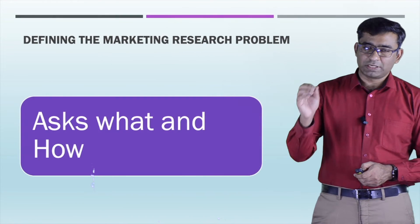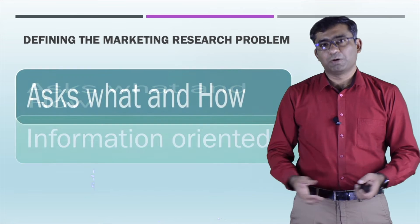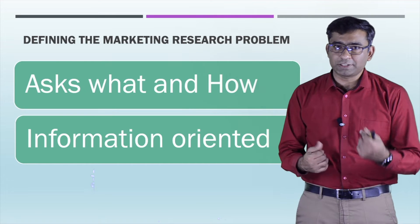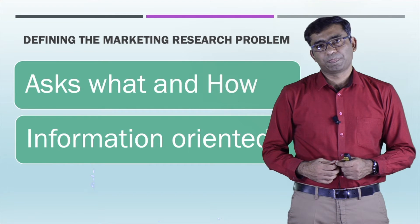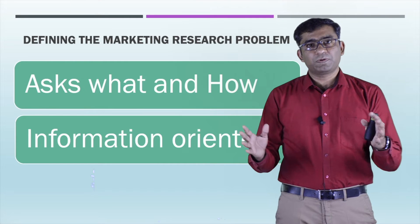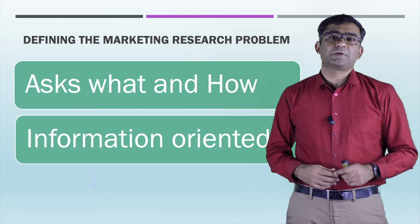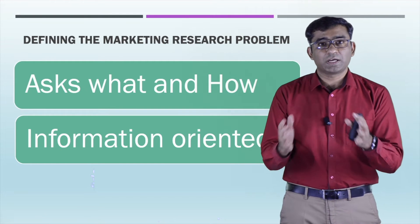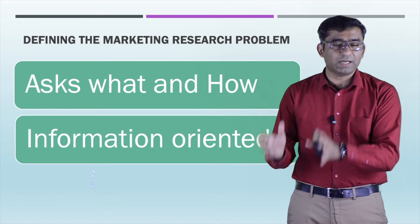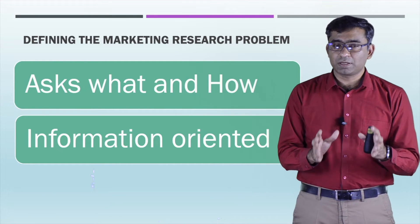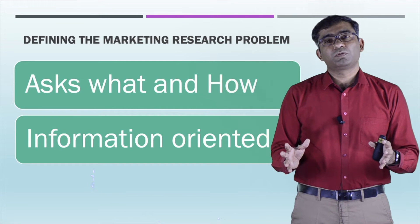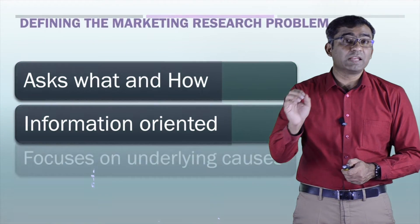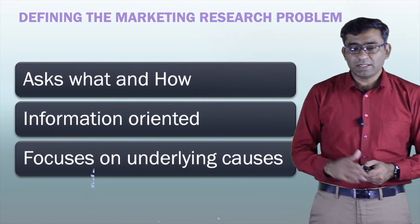The marketing research problem asks what and how. It is not decision-oriented or action-oriented — it is information-oriented. You may use different techniques to collect data, maybe from secondary data, questionnaires, or interviews. Many methods are available. You are trying to collect as much information as possible to solve the problem faced by top management. So this is information-oriented.